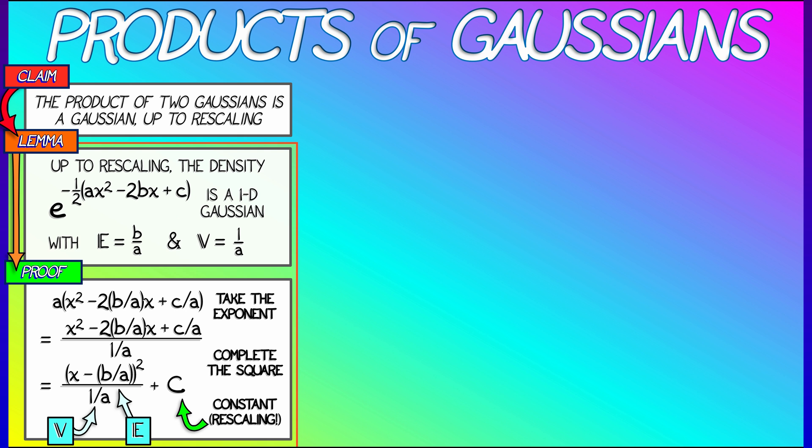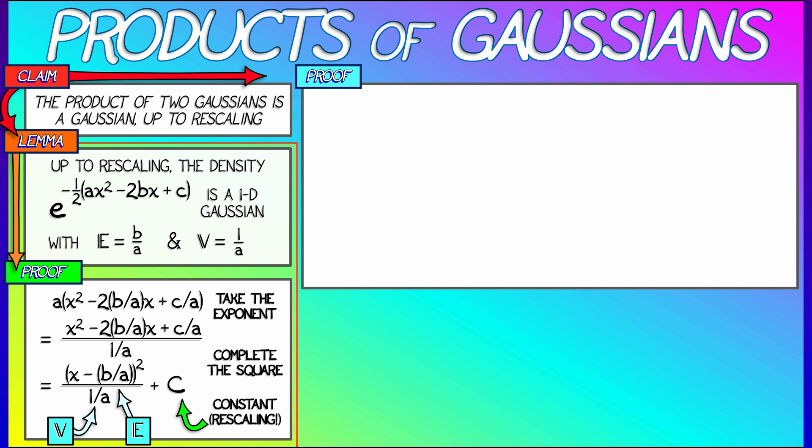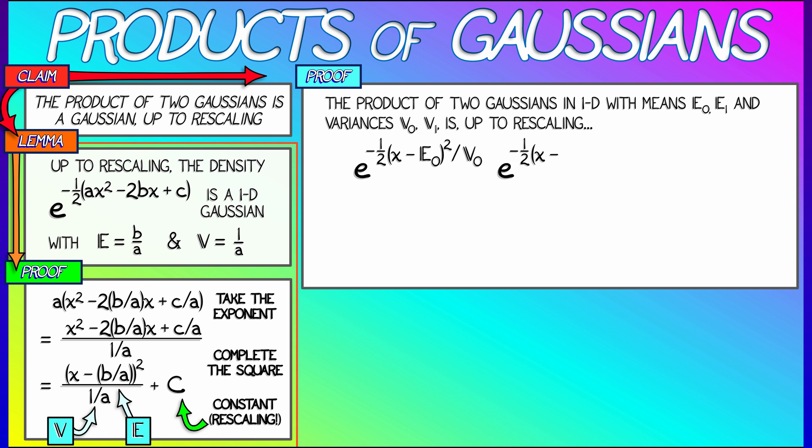Now, how does this help us? Well, what we're going to do is we're going to say now we have two arbitrary Gaussians in 1D with expectation e0 and e1 and variances v0 and v1. And I'm going to take e to the minus one-half quantity x minus e0 squared divided by v0 times e to the minus one-half quantity x minus e1 squared divided by v1.